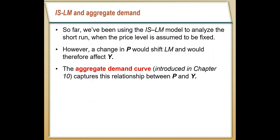We've primarily assumed that the price level is fixed — that it's not going to change in the short run or the long run. But if we want to see how changes in the money supply and changes in government spending can have effects on both the short term and the long term, we need to allow the price level to shift. The price level primarily presents itself in the LM equation, which is an equation with real money balances. So as prices go up, the purchasing power of money goes down. We can allow the price level to change within the LM equation to get our aggregate demand curve, just like we had in chapter 10.